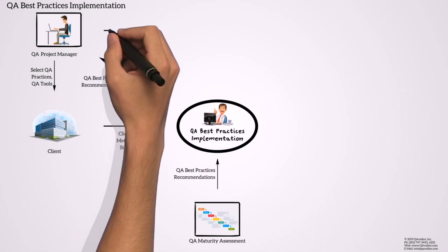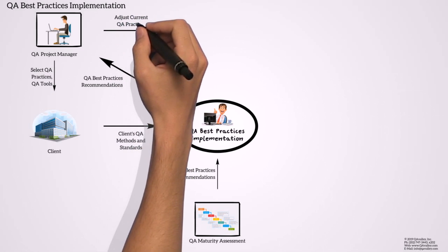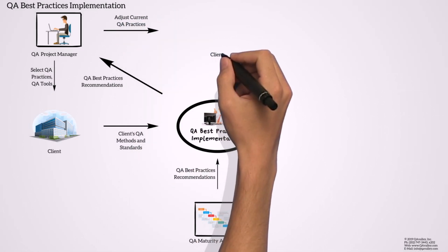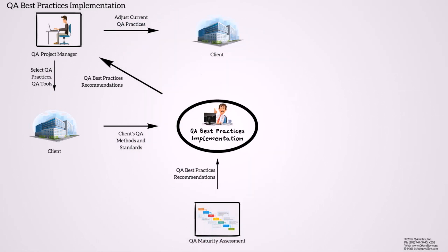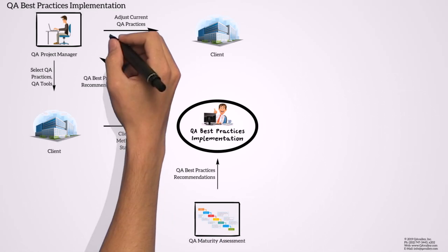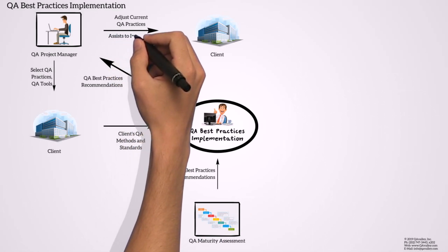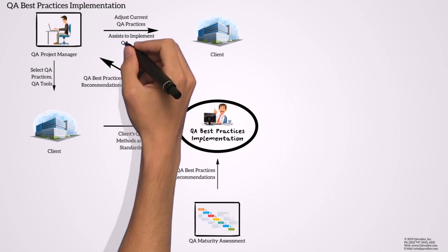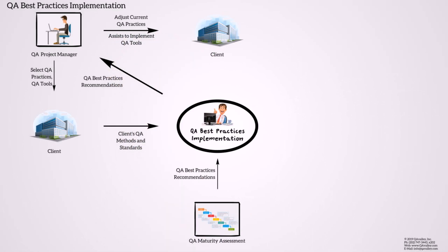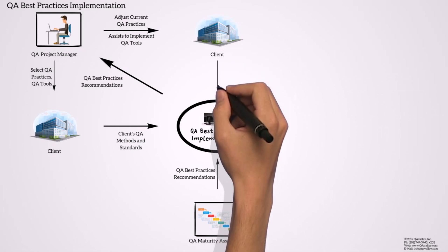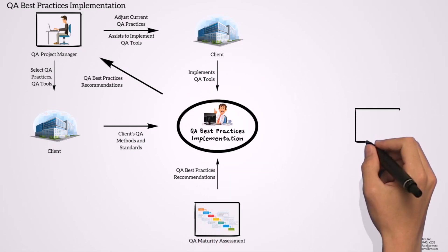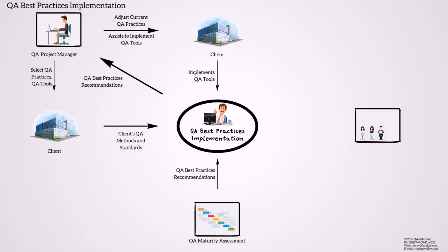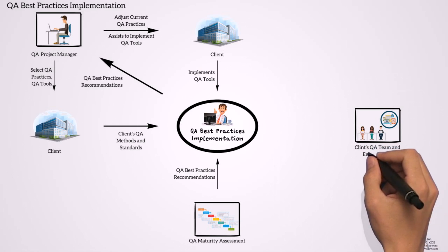We will then proceed to assist the client in adjusting the current QA practices so that these become best practices. We will further assist in the implementation of the QA testing tools to be used in these new practices. The client then implements those QA tools and QA practices into their current QA environment.